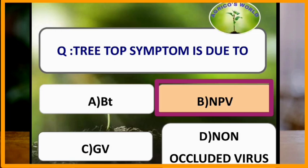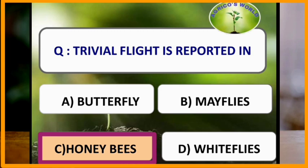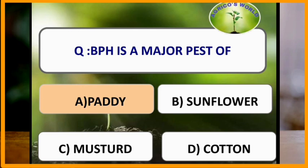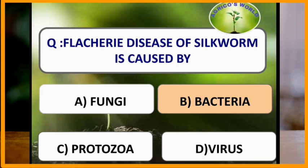Trivial flight is reported in honey bees. Dead heart is not formed by internodal borer. Brown plant hopper is a major pest of paddy.